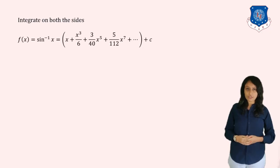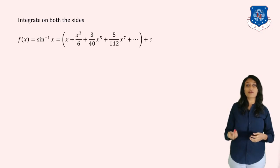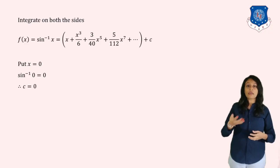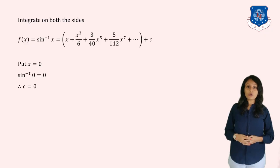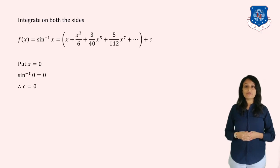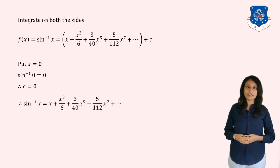On integrating f'(x), we get f(x) = sin⁻¹x = x + x³/6 + (3/40)x⁵ + … + c. To find c, substitute x = 0 everywhere: sin⁻¹(0) = 0 + c, and since sin⁻¹(0) = 0, we get c = 0. Substituting c = 0, the final answer is: sin⁻¹x = x + x³/6 + (3/40)x⁵ + …